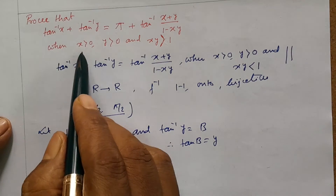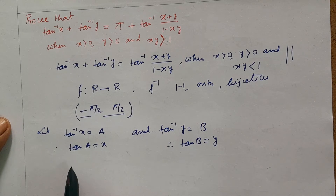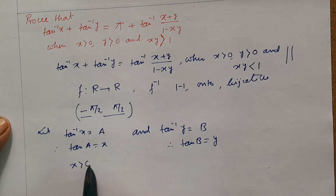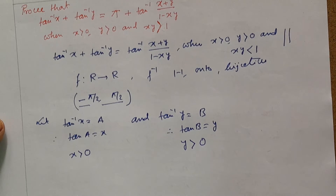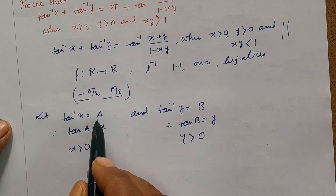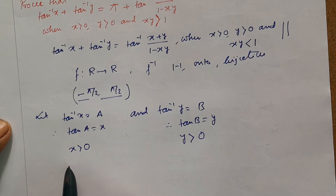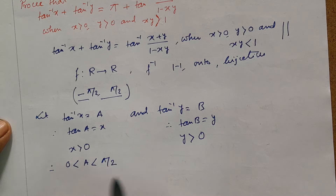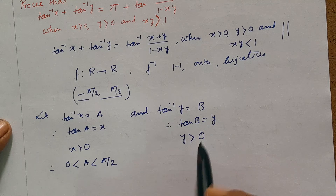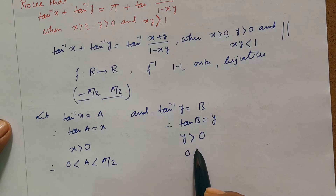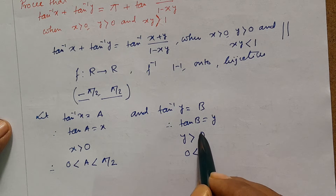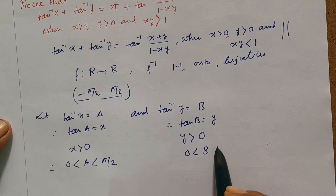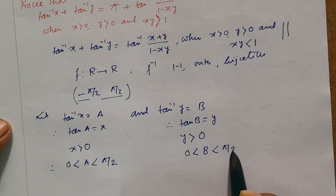Given that x greater than 0 and y greater than 0, we can say that a is in the range from 0 to pi by 2, and b is also in the range from 0 to pi by 2. So both a and b are greater than 0 and less than pi by 2.